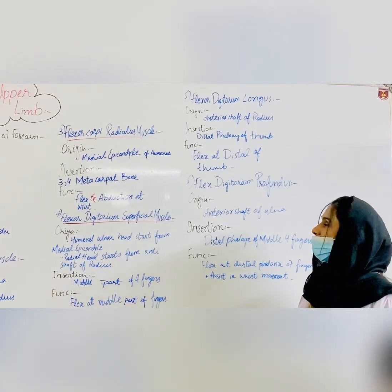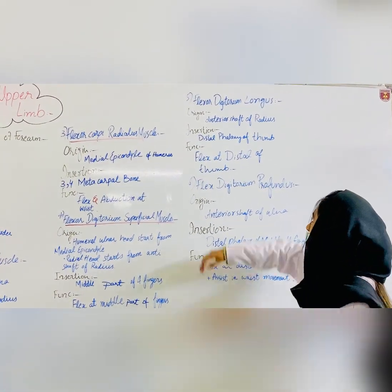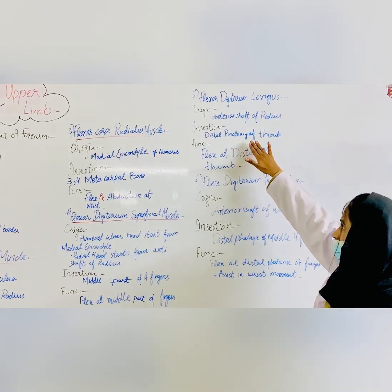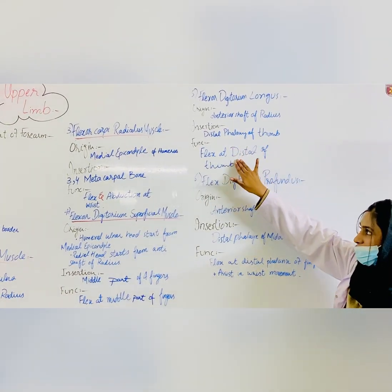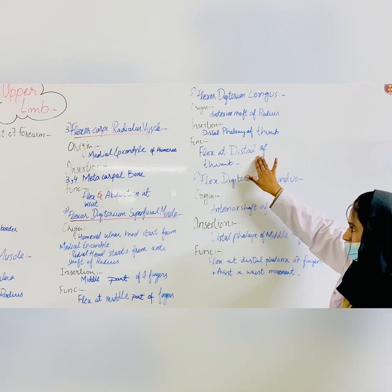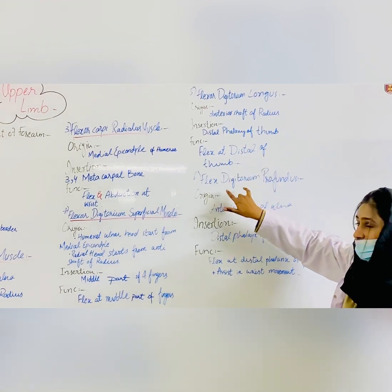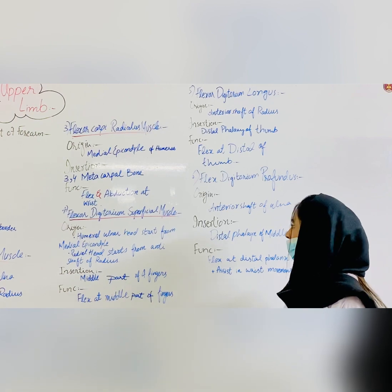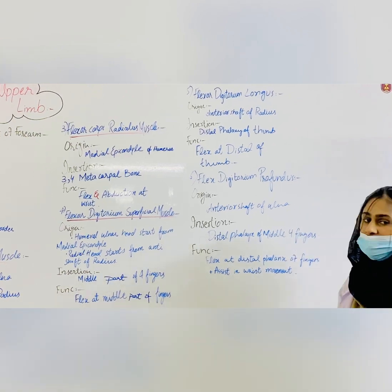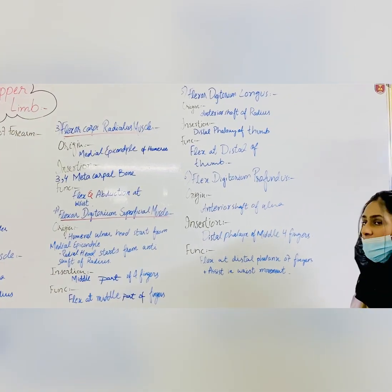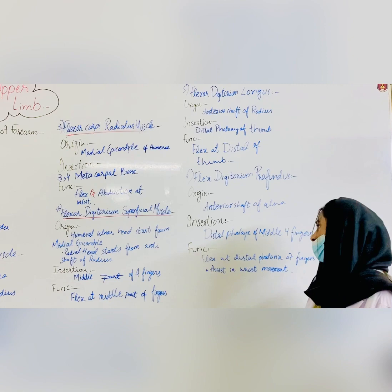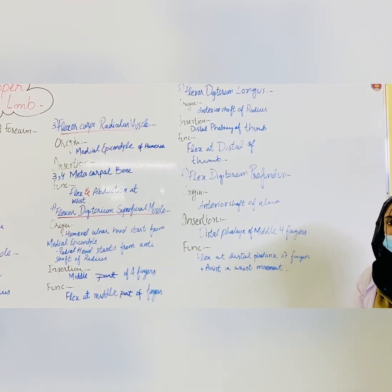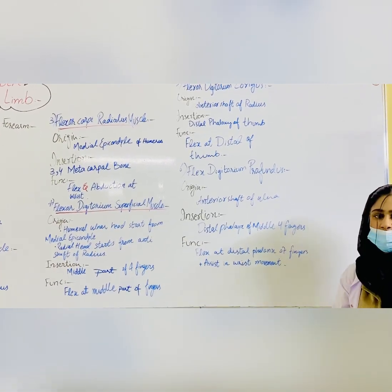The fifth muscle is the flexor pollicis longus. Its origin is the anterior shaft of the radius, and it inserts at the distal phalanx of the thumb. Its function is flexion at the distal phalanx of the thumb. The sixth muscle is flexor digitorum profundus. Its origin is the anterior shaft of the ulna, insertion is the distal phalanges of the medial four fingers, and its function is flexion at the distal phalanges of the fingers.